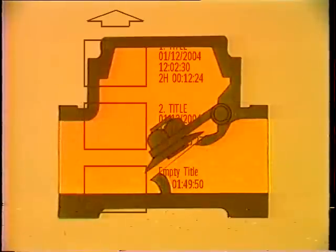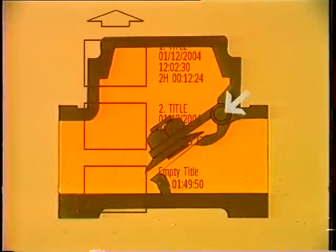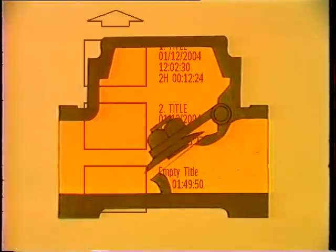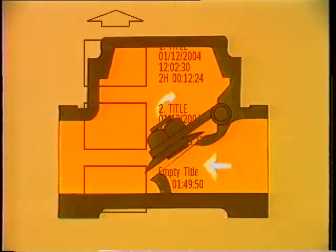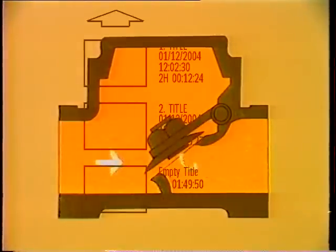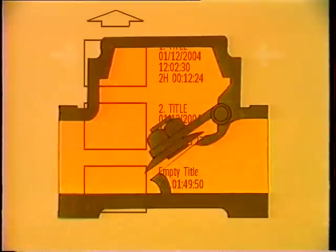On the swing check valve, the disc is attached to a pivoting arm or hinge pin. Flow through the system keeps the arm raised and the disc up. If flow is stopped or reversed, the disc will shut. A cap on the valve body gives access to the disc for maintenance.